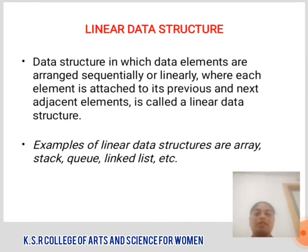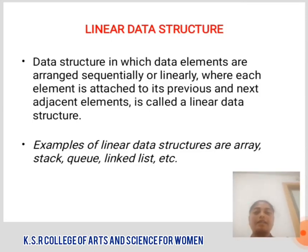Linear Data Structure: A data structure in which the data elements are arranged sequentially or linearly, where each element is attached to its previous and the next adjacent elements, is called a Linear Data Structure. Examples of Linear Data Structures are Array, Stack, Queue, Linked List, etc.